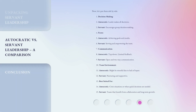Now let's put them side by side. Decision-making: Autocratic — leader makes all decisions; Servant — encourages group decision-making. Focus: Autocratic — achieving goals and results; Servant — serving and empowering the team. Communication: Autocratic — top-down, limited feedback; Servant — open and two-way communication. Team environment: Autocratic — might be stressful due to lack of input; Servant — nurturing and supportive. Best suited for: Autocratic — crisis situations or when quick decisions are needed; Servant — teams that benefit from collaboration and long-term growth.